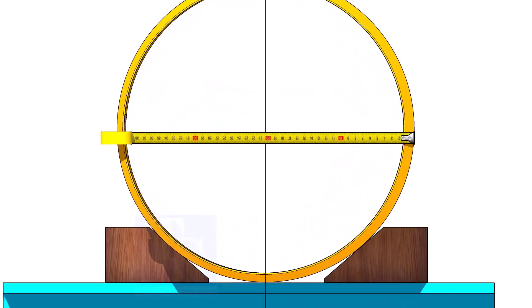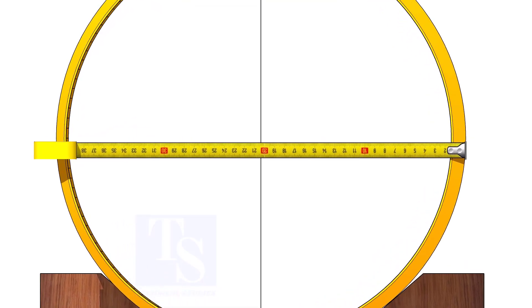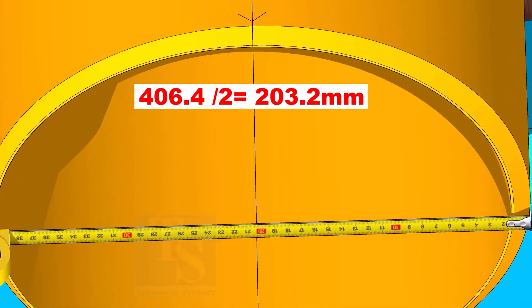This is a 16-inch pipe. OD of a 16-inch pipe is 406.4 millimeters. Mark the point where the half OD 203.2 millimeters reaches.